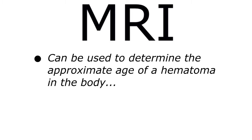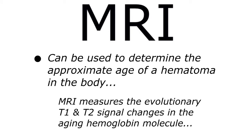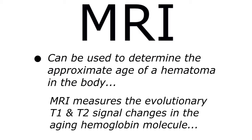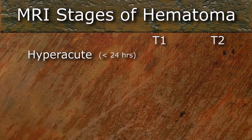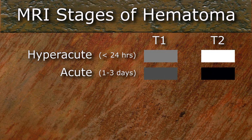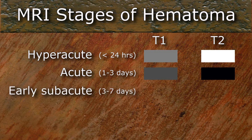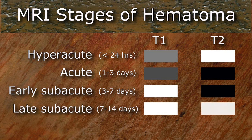We are told that this phenomenon is possible because of the evolutionary changes in the T1 and T2 signal characteristics of the hemoglobin molecule in an aging thrombus, roughly characterized as: hyperacute — iso-intense to brain on T1 and hyper-intense on T2; acute — hypo-intense to brain on T1 and dark on T2; early subacute — bright on T1 and dark on T2; late subacute — bright on T1 and bright on T2; and chronic —